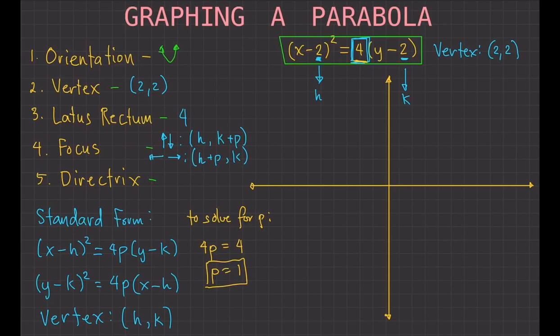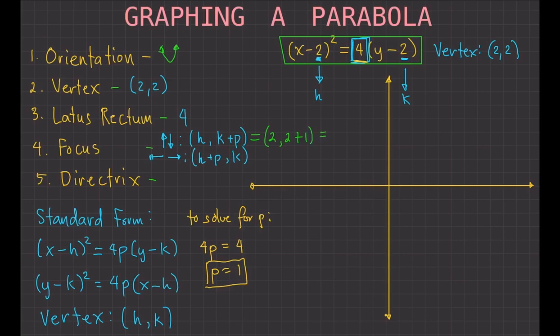Note that p could be positive or negative. Since our parabola opens up or down, we use the formula: focus equals (h, k + p). Our h is 2, k is 2, and p is 1, so the focus is (2, 3).